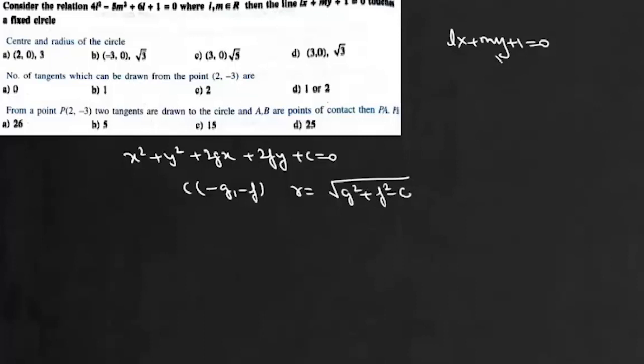This line is tangent to this circle. That means perpendicular distance from the center must equal its radius. So we can write |-lg - mf + 1|/√(l² + m²) = √(g² + f² - c). Now we will square it.